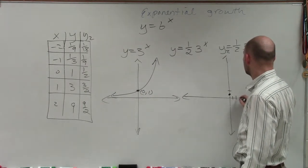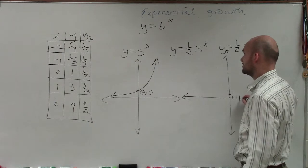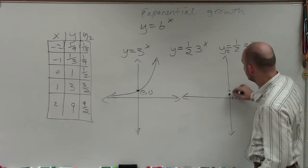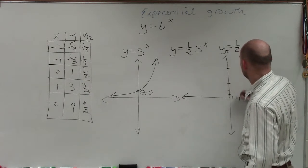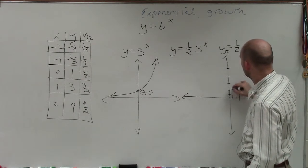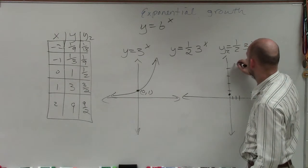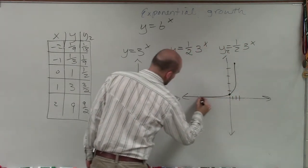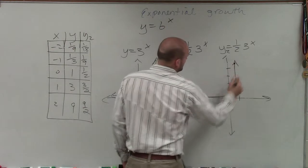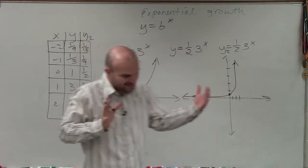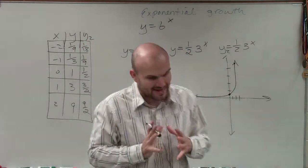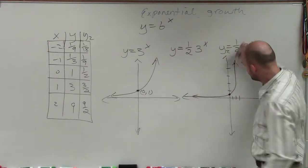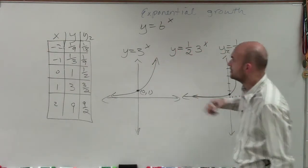And when I get up to x equals 2, instead of going up to 9, now I'm at 4.5. So you can see the difference. What that has created is a compression of my graph, pushing down my y-intercept.